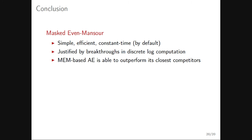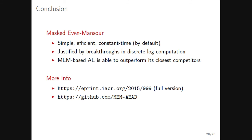In conclusion, the Masked Even-Mansour construction is simple, efficient, and constant-time. Domain separation is justified by breakthroughs in discrete logarithm computation. Two authenticated encryption schemes with excellent performance numbers were presented. The full paper with security proofs is available on ePrint, and all implementations — C reference code plus optimized AVX, AVX2, and AES-NI versions — are available on GitHub.